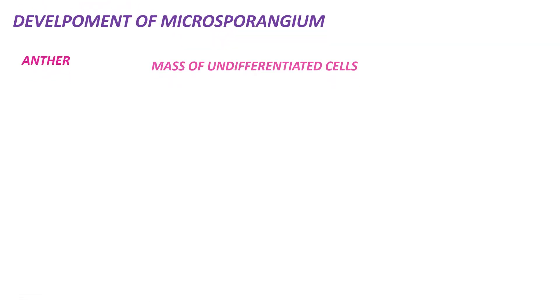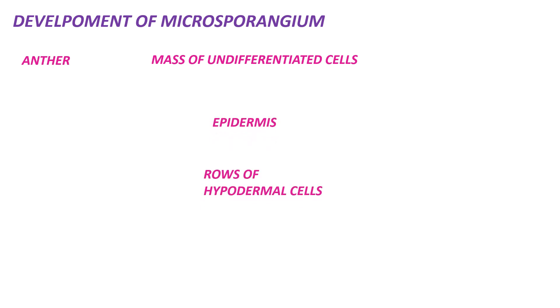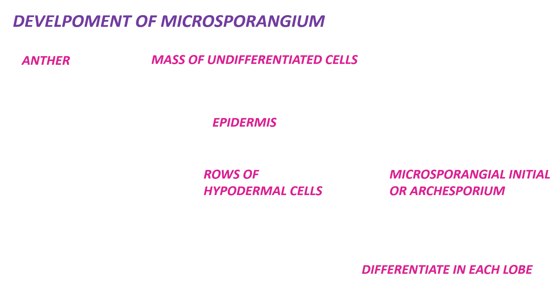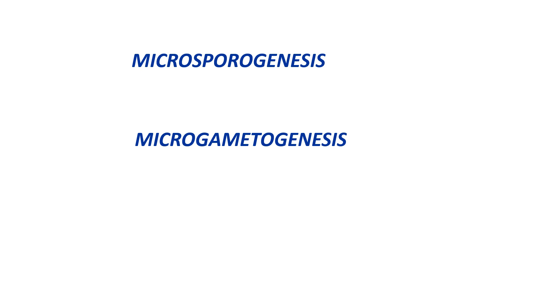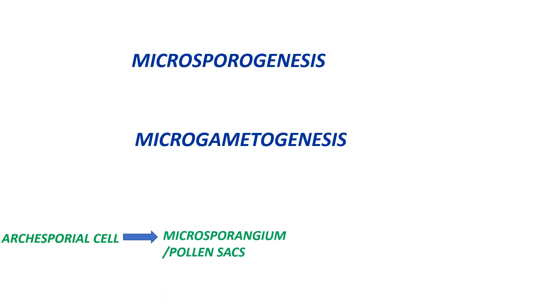Pollen grains are formed in the microsporangium. The microsporangium develops in the anther, which has a mass of undifferentiated cells surrounded by epidermis and rows of hypodermal cells called microsporangial initials or archesporium. Differentiation of these cells occurs in each lobe and gives rise to the microsporangium. The complete process of development of the male gametophyte occurs in two stages: microsporogenesis and microgametogenesis.